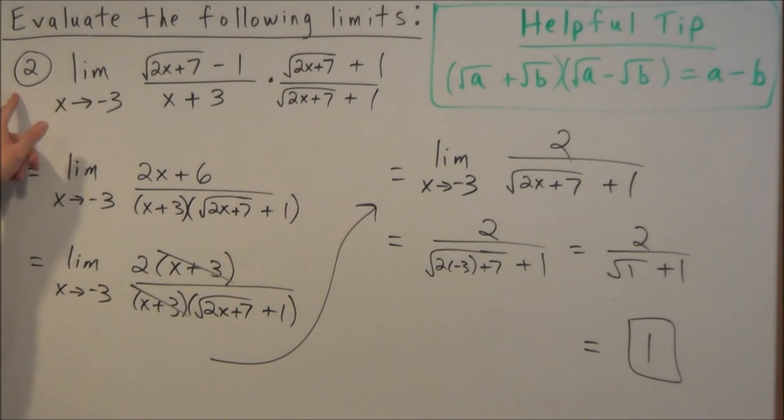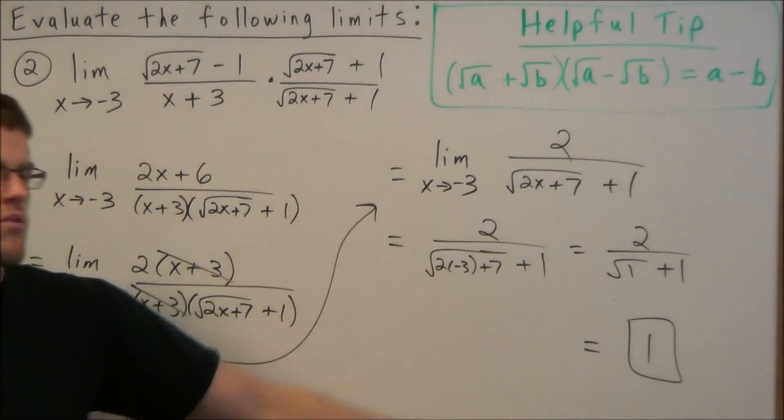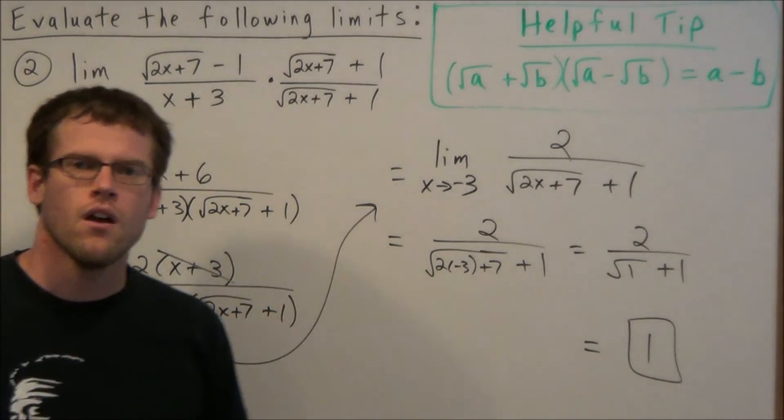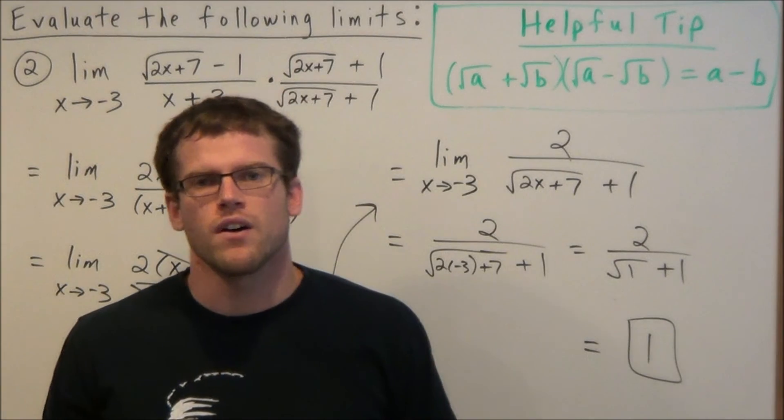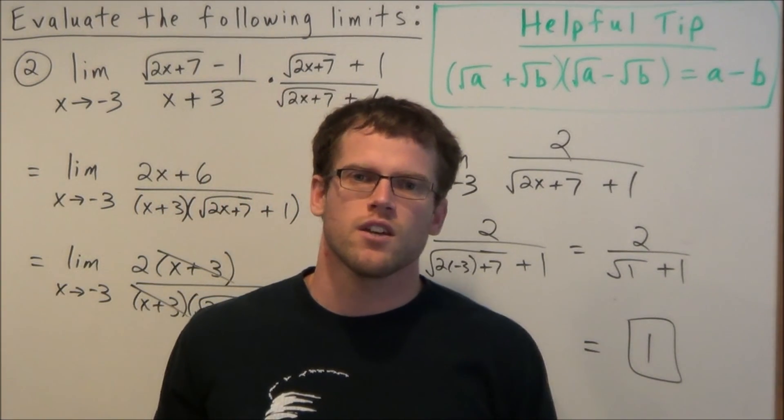So the limit as x approaches negative 3 for our second example here should work out to positive 1. Okay, well this is going to conclude this video on evaluating limits involving radicals. Thank you all for watching, and I hope that this was helpful.